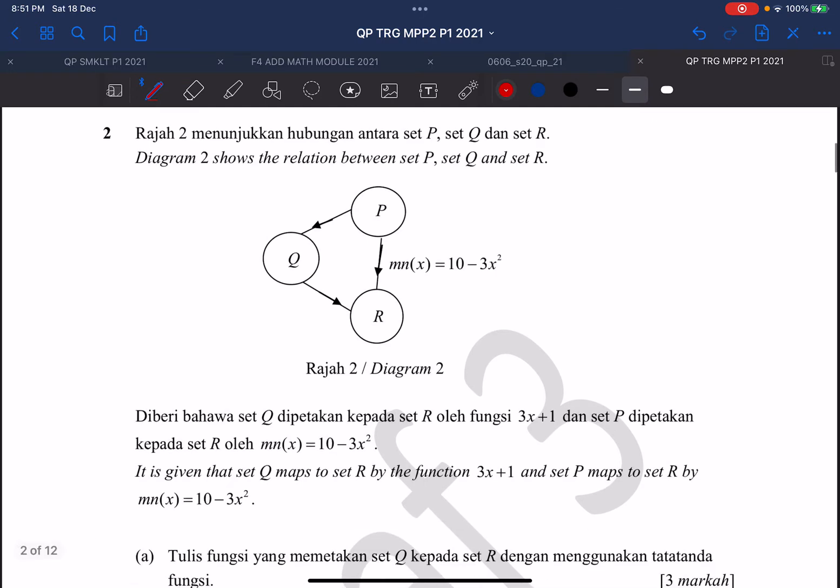It's given in the diagram that the function that maps from P to R is M(n) equals 10 minus 3x squared. And given that Q to R, from Q to R, the function will be 3x plus 1, but we don't know about the notation, whether it's M or N or another alphabet. But we know that the function is actually 3x plus 1.